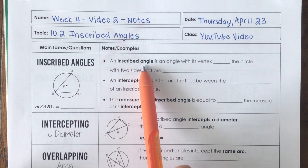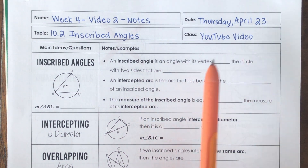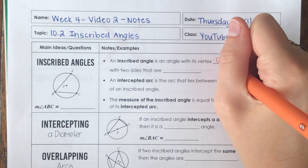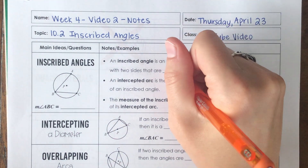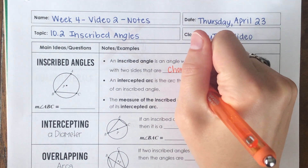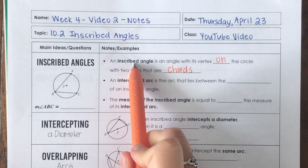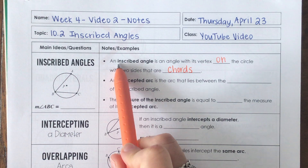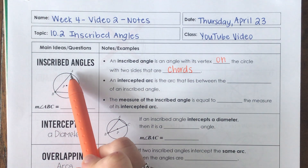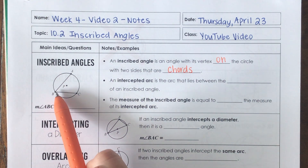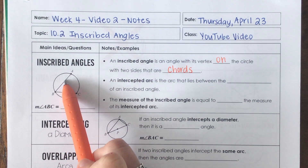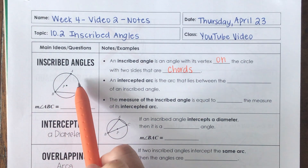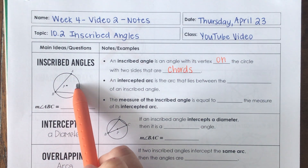An inscribed angle is an angle with its vertex on the circle, with two sides that are chords. So inscribed means it's inside the circle, and the two points are on the circle themselves, as is the vertex. It doesn't go to the center — it goes to another piece that's actually on the outside of the circle.